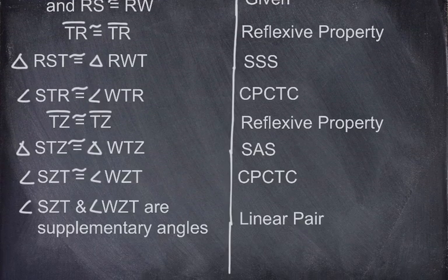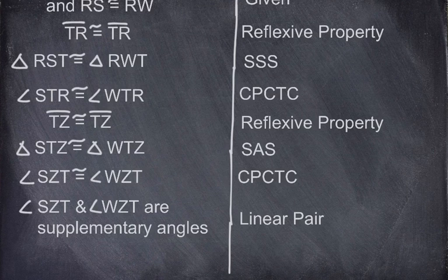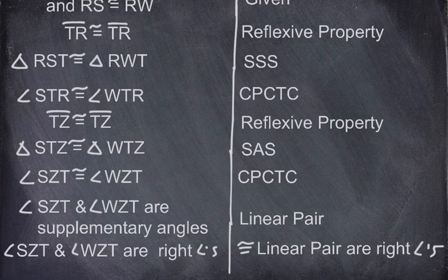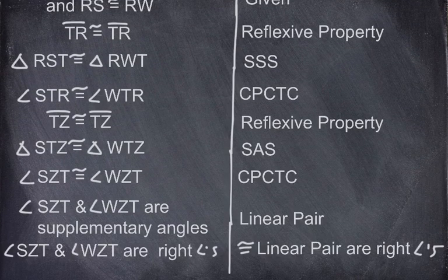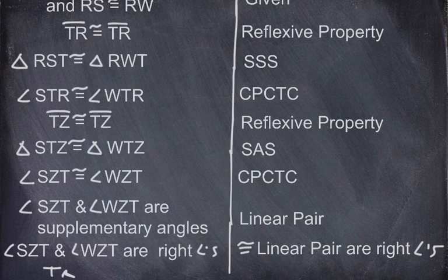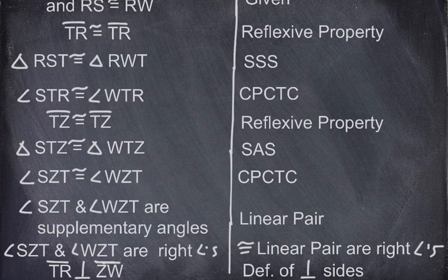This is a long two-column proof, but doable. We're trying to prove they're perpendicular. If two angles are congruent and supplementary, they must be right angles. So angle SZT and angle WZT are right angles — a congruent linear pair are right angles. Therefore, TR is perpendicular to SW, because if they form right angles, then they're perpendicular.